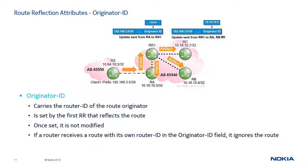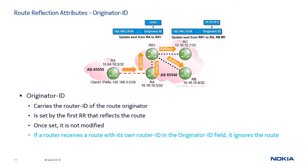The originator ID is used for loop prevention within an AS when route reflection is deployed. The RR that first reflects a route sets this attribute to the router ID of the router that originated the route into the AS. Once set, the originator ID remains unmodified. If a router receives an update that contains its own router ID in the originator ID field, it discards the update. In the diagram, AS 65550 sends an update via the eBGP session to router RA. RA propagates the update to RR1 with no originator ID. RR1 sets the originator ID to 10.16.10.5, which is the router ID of the originator RA, then reflects the route to its clients RA, RB, and RC.